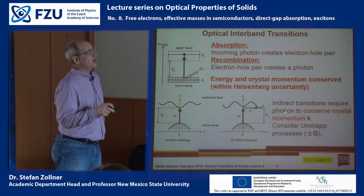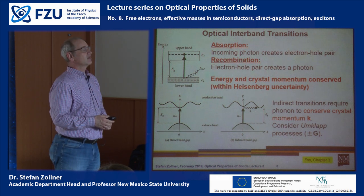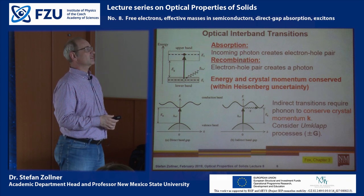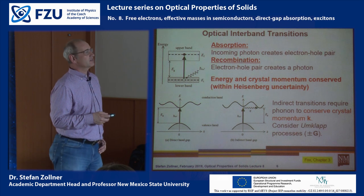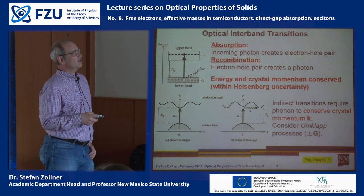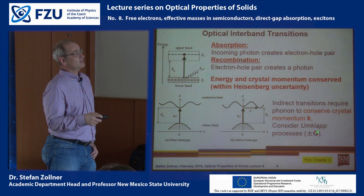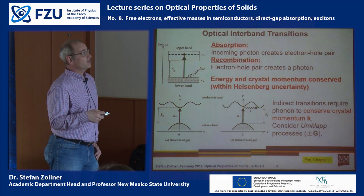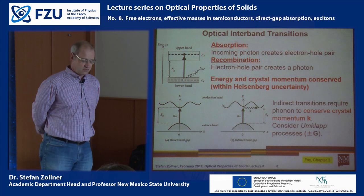Indirect transitions require a phonon to conserve crystal momentum. Alternatively, defects, alloying, or being in a nanoparticle can help conserve momentum. Crystal momentum is not the same as regular momentum. If delta k is non-zero but the change in wave vector equals a reciprocal lattice vector, that is called an umklapp process, and because the crystal momentum is periodic, adding or subtracting a reciprocal lattice vector does not change the momentum.